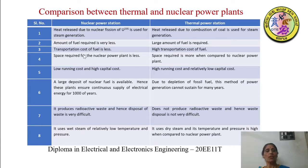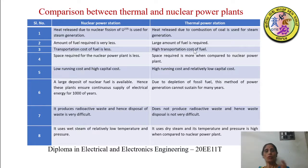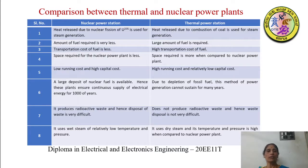Third: the transportation cost of fuel is less for nuclear power plants because the quantity is less, whereas for thermal power plants the quantity is large, leading to high transportation cost. For example, 1 kg of nuclear fuel is equivalent in energy to approximately 4,200 tons of coal, so you can imagine how much more transportation cost is involved for thermal. Fourth: space required for a nuclear power plant is less compared to a thermal power plant.